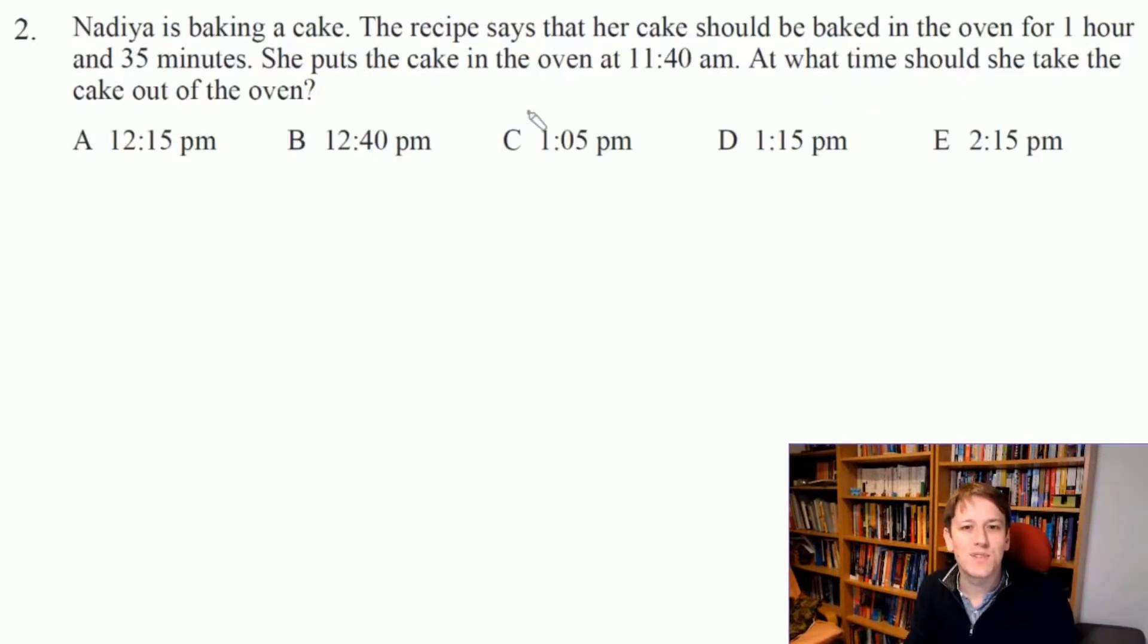So Nadia puts a cake in the oven at 11.40 and it's going to bake for an hour and 35 minutes. I want to see what time we're going to take it out, so the way I would think about this is to chunk up the 1 hour 35 as 1 hour plus 20 minutes plus 15 minutes. And then 11.40 plus 1 hour takes us to 12.40. Another 20 minutes takes us to 13:00, and then another 15 minutes takes us to 13:15.